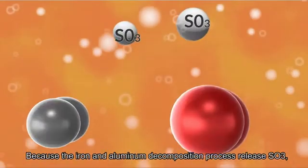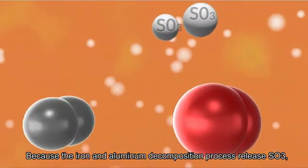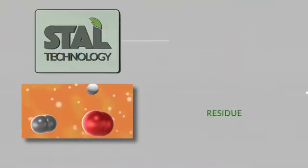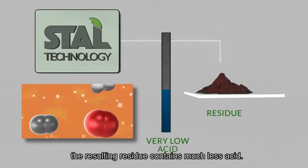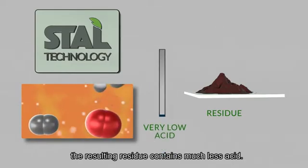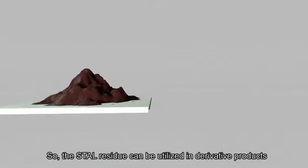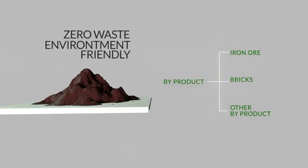Because the iron and aluminium decomposition process releases SO3, the resulting residue contains much less acid. So, the STAL residue can be utilized in derivative products, such as iron ore and others.